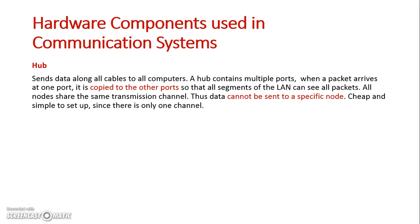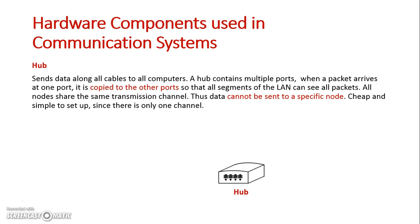Each port on a hub sends the exact same data to all others. So if one node sends data to the hub, all the other ports will receive that data — it goes to all devices. Basically, data cannot be sent to a specific node.